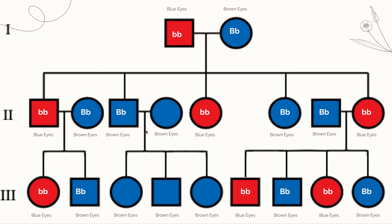For this small family here, we cannot know exactly what genotype this individual has because all of their offspring have brown eyes. Those offspring could all be heterozygous or they might be homozygous dominant. If this individual is homozygous dominant, they would pass on dominant alleles from each parent. So I've labeled these as possible genotypes — either homozygous dominant or heterozygous.